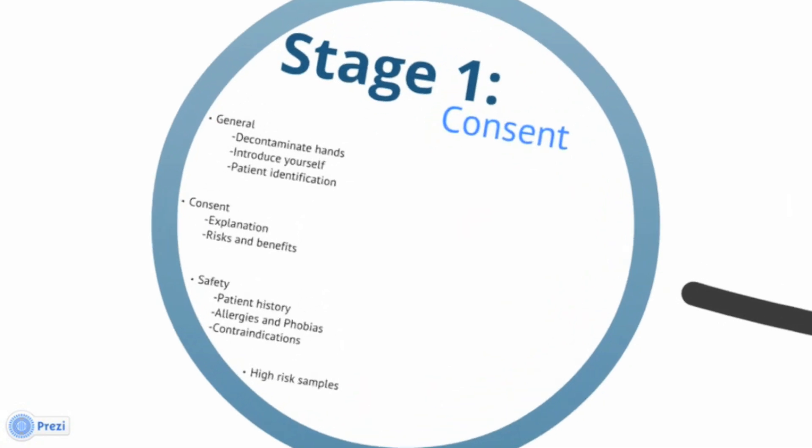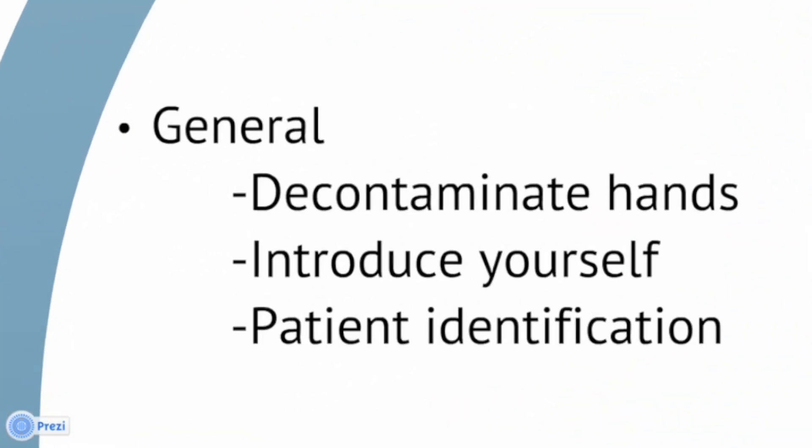Stage 1 involves obtaining consent from the patient. When you enter the patient environment you must decontaminate your hands, introduce yourself and identify the patient using full name, date of birth and hospital number. This should be done by checking the patient wristband against an official hospital document such as a blood culture request form.